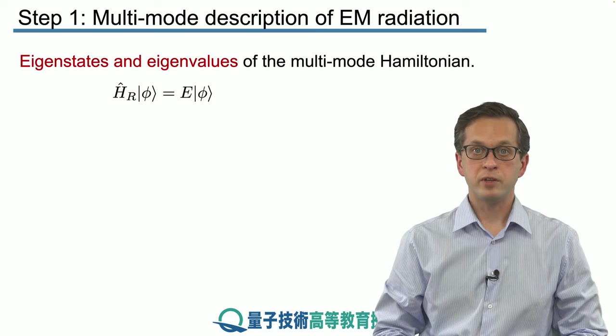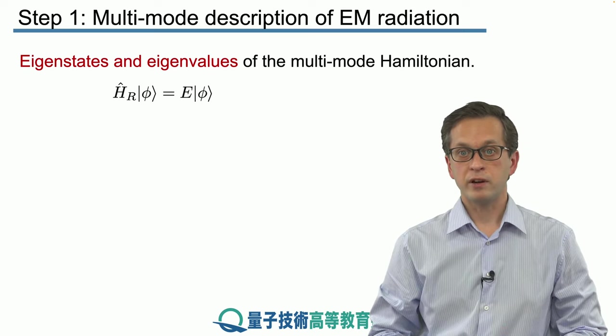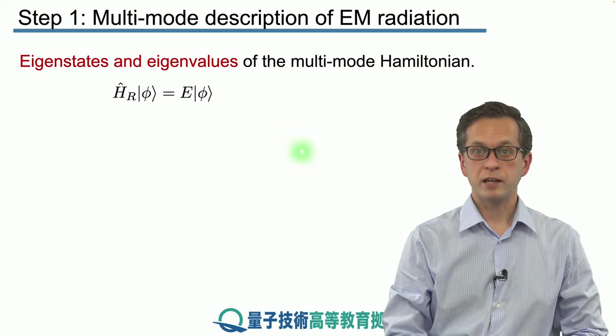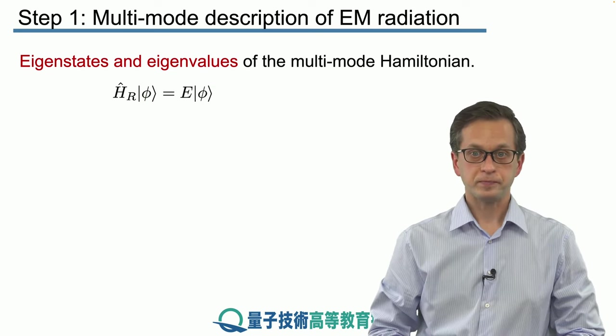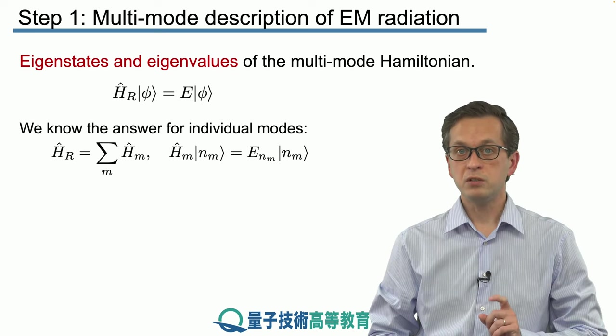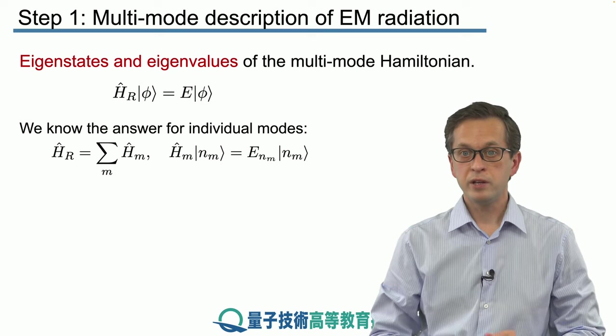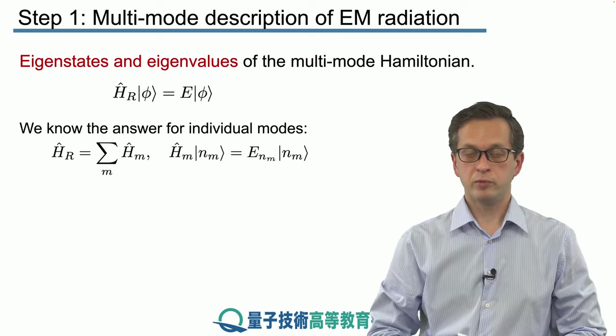The usual question that we ask immediately after writing down the Hamiltonian is what are its eigenstates and what are its eigenvalues. We denote the eigenvalues by E and the eigenstates by ket phi. Luckily, we know what are the eigenstates and eigenvalues of each individual mode. Therefore, we can immediately write down the eigenstates and energies for the multimode case.